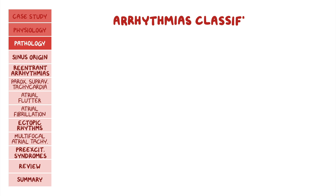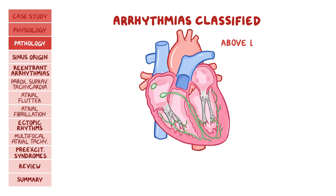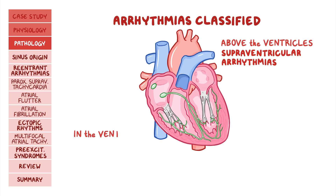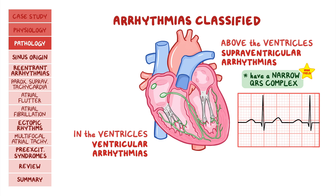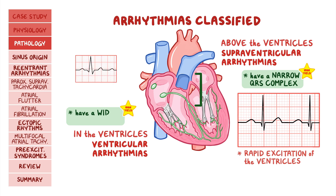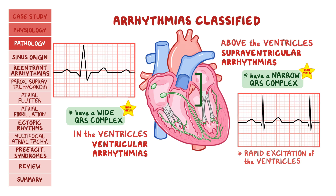Arrhythmias can be classified into those originating from above the ventricles — supraventricular arrhythmias — and those originating in the ventricles — ventricular arrhythmias. In general, supraventricular arrhythmias have a narrow QRS complex because there's a rapid excitation of the ventricles, meaning the arrhythmia is originating above or within the bundle of His. Ventricular arrhythmias have a wide QRS complex because there's a slower spread of ventricular depolarization.